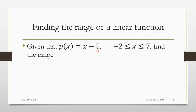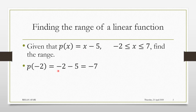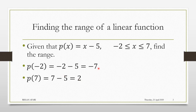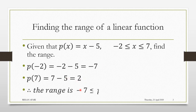Let's see how that is done. We use the first extremity, which is negative 2, as our input. We put negative 2 into this function and then we get negative 7. Then we put the second extremity into the function and we get 2. So now we have an output of negative 7 when we have an input of negative 2, and an output of 2 when the input is 7.